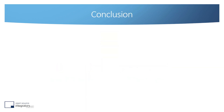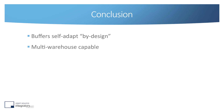Some conclusions about DDMRP: the buffer self-adapts by design because the ADU is calculated every day and will update the sizes of your zones and buffers. You can have buffers for the same products in different warehouses, so they manage distributed chains. If you want to use future data for the ADU calculation, you can of course integrate forecasts — even if forecasts are highly inaccurate, you can still use them to predict demand and base your ADU on this.